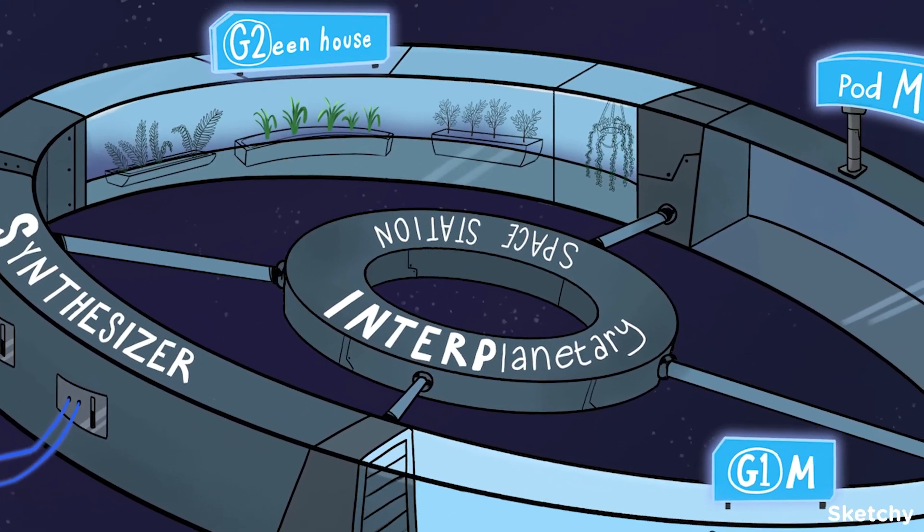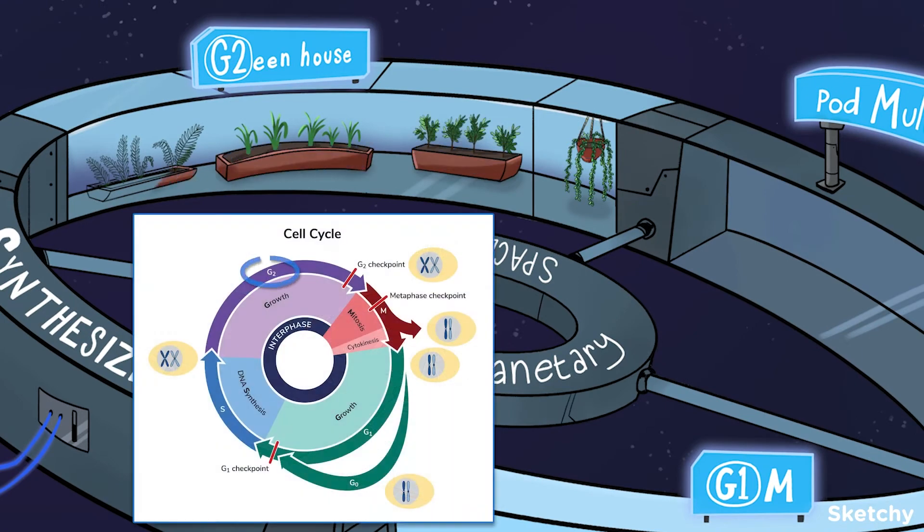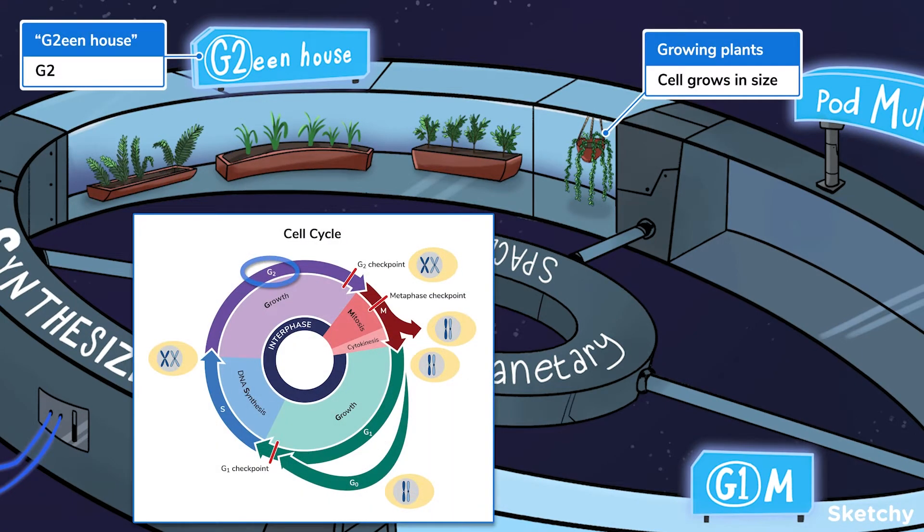The final part of interphase is G2, also called the second gap or growth stage. And what better place to illustrate that than by this greenhouse. Check out these growing plants. That guy from that book about being stuck on Mars would be proud. Anyways, in G2, a cell continues to grow in size while preparing for mitosis and cell division.